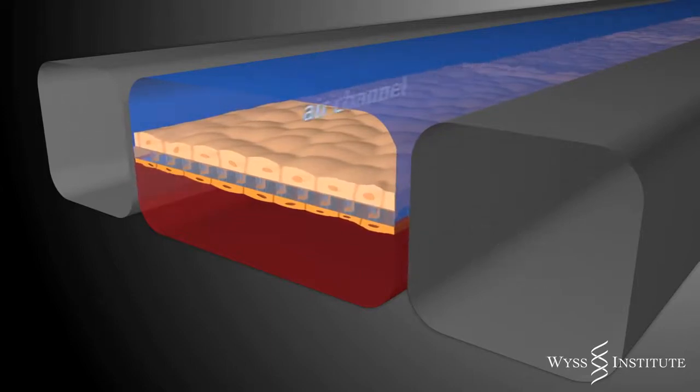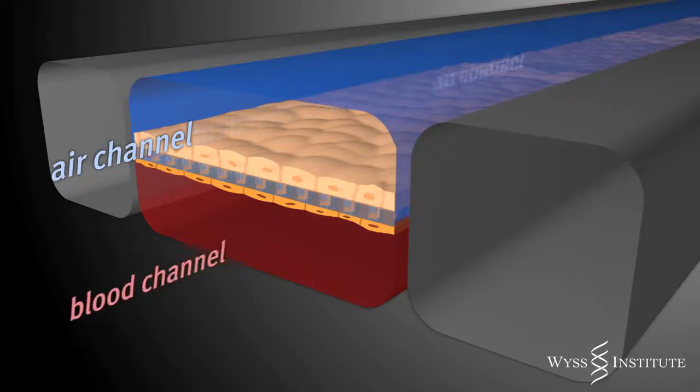In the lung on a chip device, air flows over the top of the human lung cells and a liquid medium containing human white blood cells flows below the capillary cell layer.